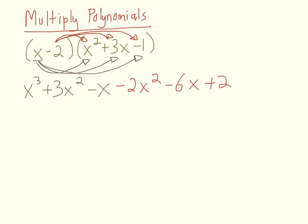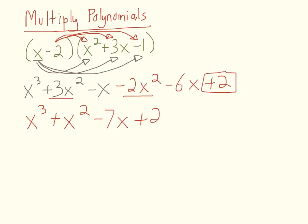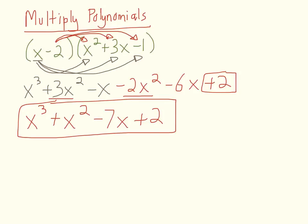Now we're going to combine like terms. There are no other terms raised to the third, so x to the third stands alone. For the x squared terms, positive 3x squared and negative 2x squared gives just x squared. For the single exponent terms, negative x and negative 6x combine to be negative 7x. And the 2 is the only constant. So the final answer is x to the third plus x squared minus 7x plus 2. That's how you multiply polynomials. And that's going to be the end of our video for today — hope this was helpful, thank you and take care.